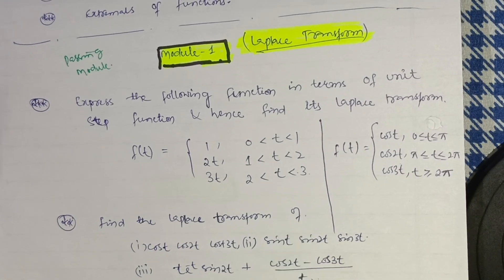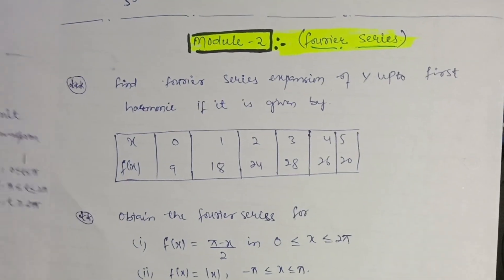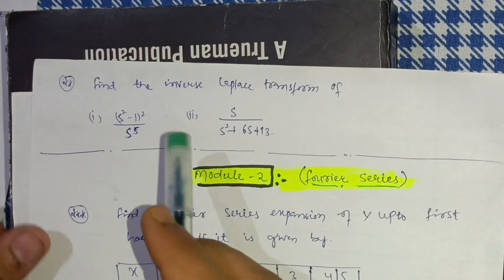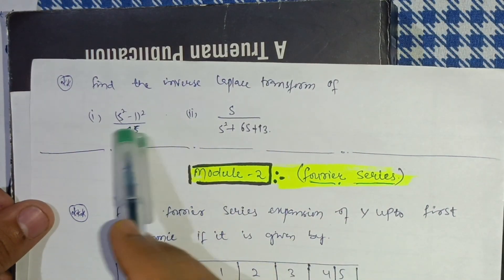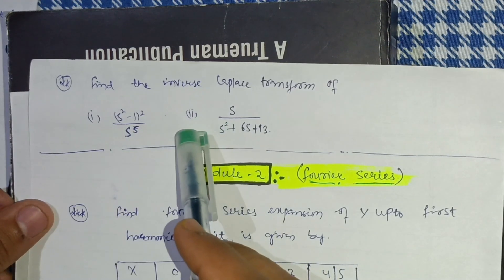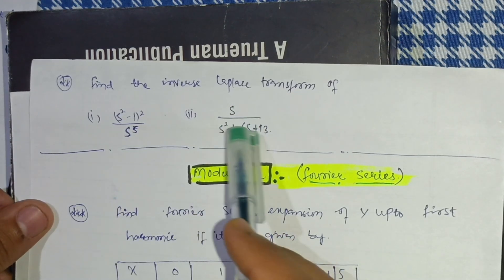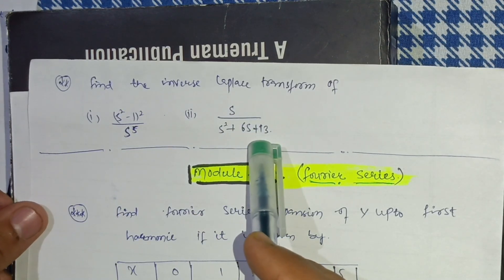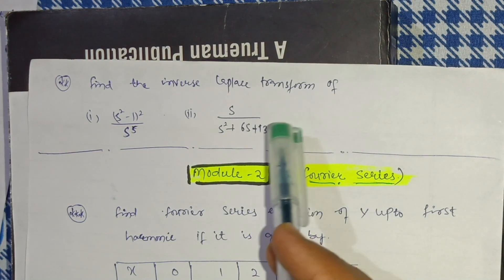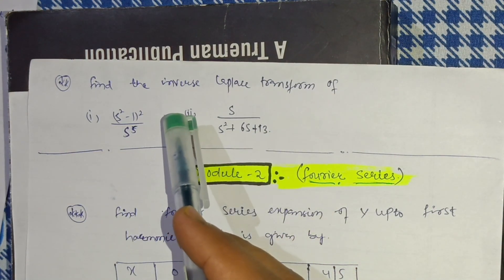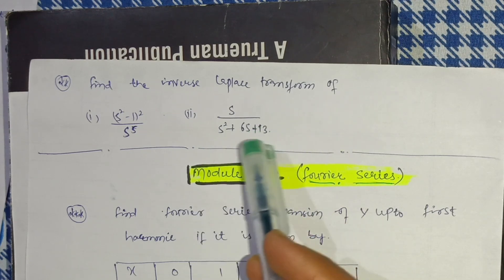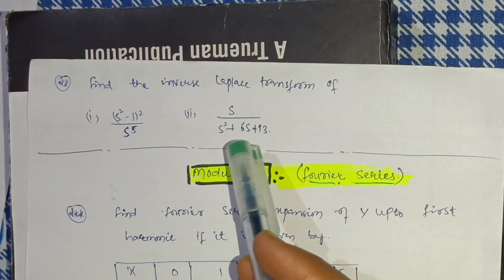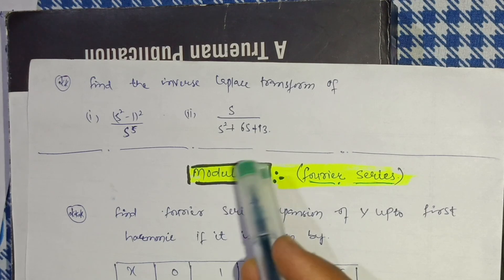Also focus on inverse Laplace transform. For example: find the inverse Laplace transform of (s² − 1)² / s⁵ and s / (s² + 6s + 13). Remember the formulas for inverse Laplace transform to handle these varieties of questions. This content is enough for Module 1 — you will easily get 15 or 20 marks.